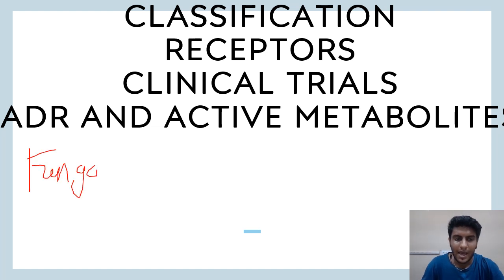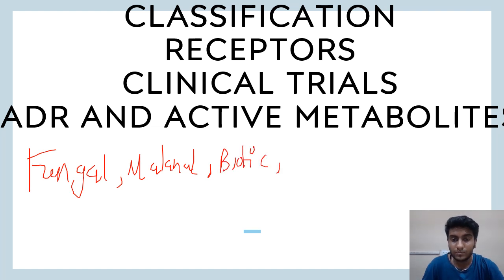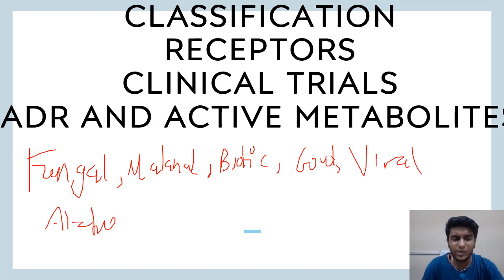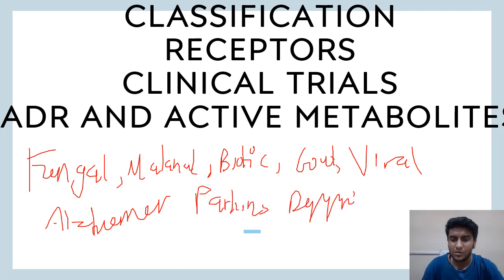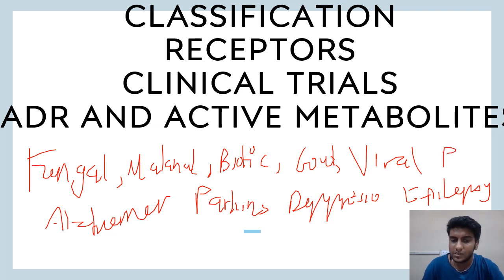In pharmacology classification, the topics to be covered on priority basis include: antifungals, antimalarials, all antibiotics, anti-gout, antivirals, and anti-Alzheimer and anti-Parkinson agents. All neurodegenerative disorders are extremely important — Alzheimer's, Parkinson's, depression, psychosis — you cannot leave them. Epilepsy and antipsychotic drugs are also classification priorities.